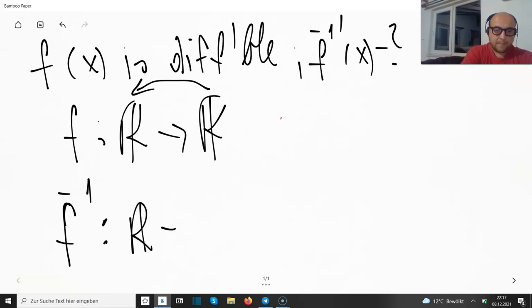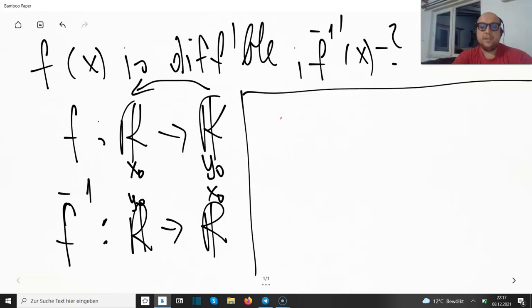Let us say this is, for example, an x₀ value and this is y₀. And this is the opposite: y₀ here and x₀ there.